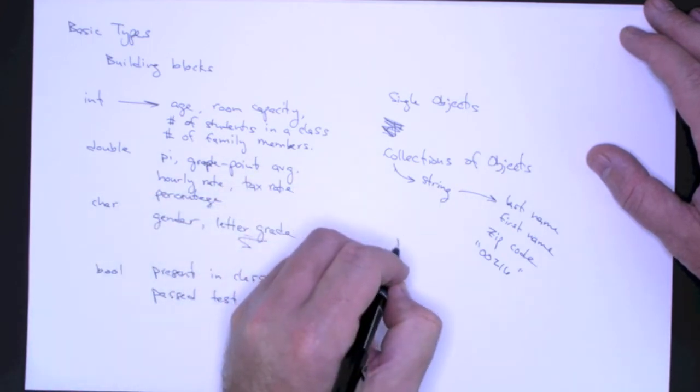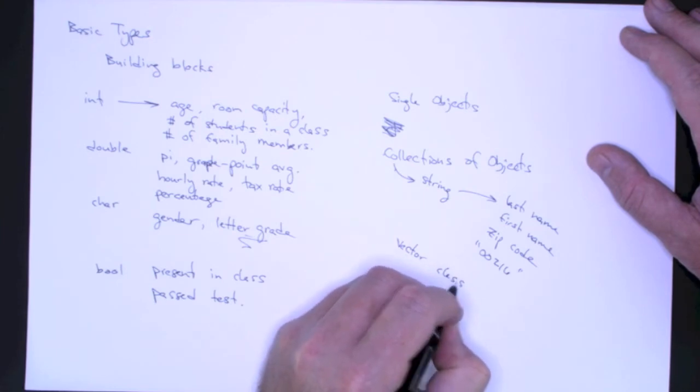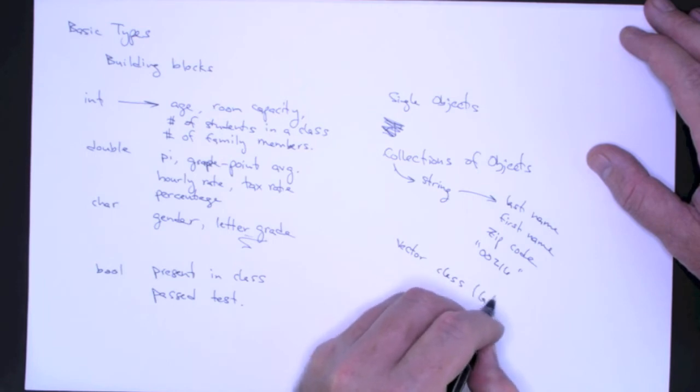And you'll learn a little later that there is a class called the vector class and it lets you create collections of arbitrary objects, but this will be a later topic.